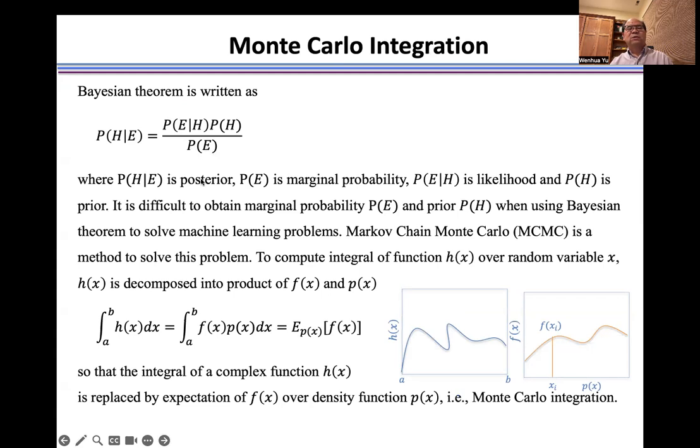It's difficult to obtain marginal probability P(E) and prior P(H) when using Bayesian theorem to solve machine learning problems. Markov Chain Monte Carlo (MCMC) is a method to solve this problem.